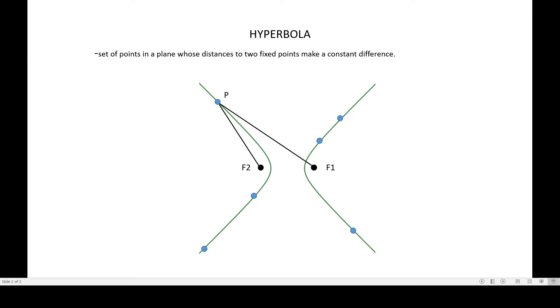Those distances are the distances to the two fixed points. Again, those distances are the distances to the two fixed points. The definition says set of points in a plane whose distances to two fixed points or foci make constant difference. Going back to the illustration.